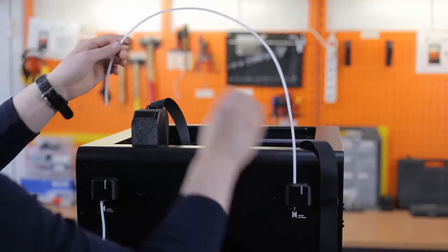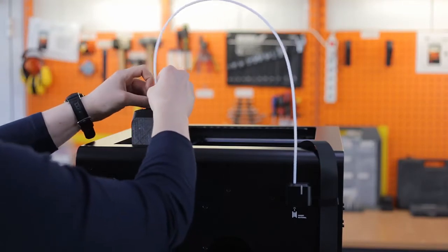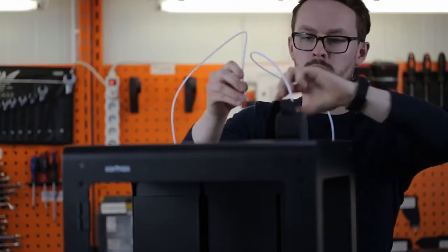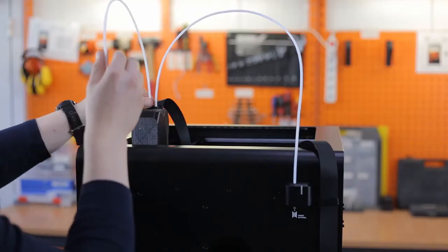Next, attach the two material guides to the extruder and to the material end stops. After connecting the guides, make sure you secure them to the extruder cable using material guide clamps.